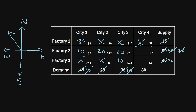The next available cell would be here, but we've already exhausted factory two's supply, so we cross that cell out and move to the very last cell. City four has a total demand of 30, which we can meet using the remaining supply from factory three. We put 30 units here, and that meets the demand for city four.